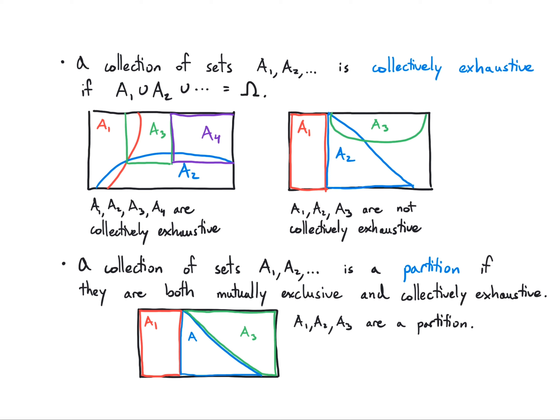One special case worth mentioning: a set and its complement always form a partition. So if I have A and A complement, that's always a partition of the universal set.